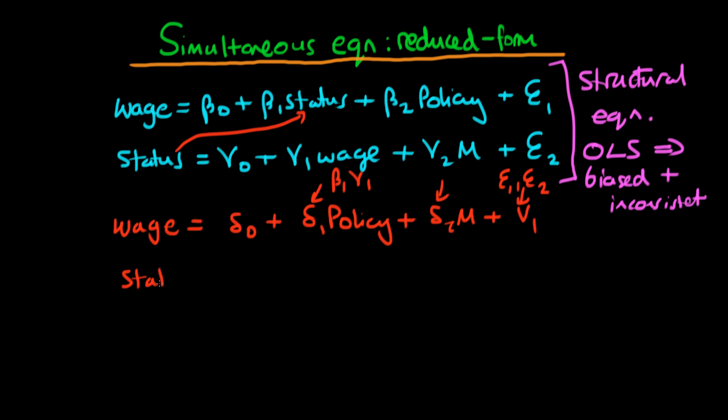We could also find a corresponding equation for an individual's level of status. And we could say that status is equal to eta 0 plus eta 1 times our policy variable plus eta 2 times whether that individual was married plus some composite error term V2 which again contains E1 and E2 but it is a slightly different functional form of E1 and E2.